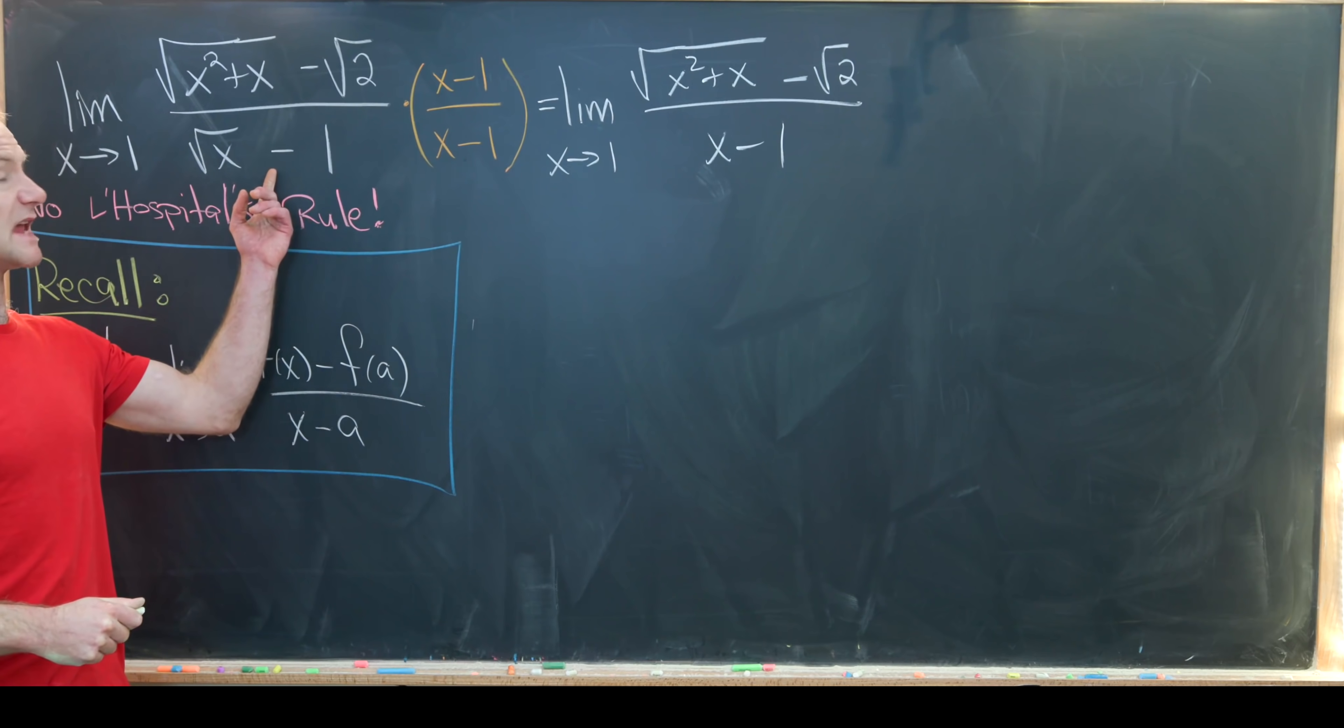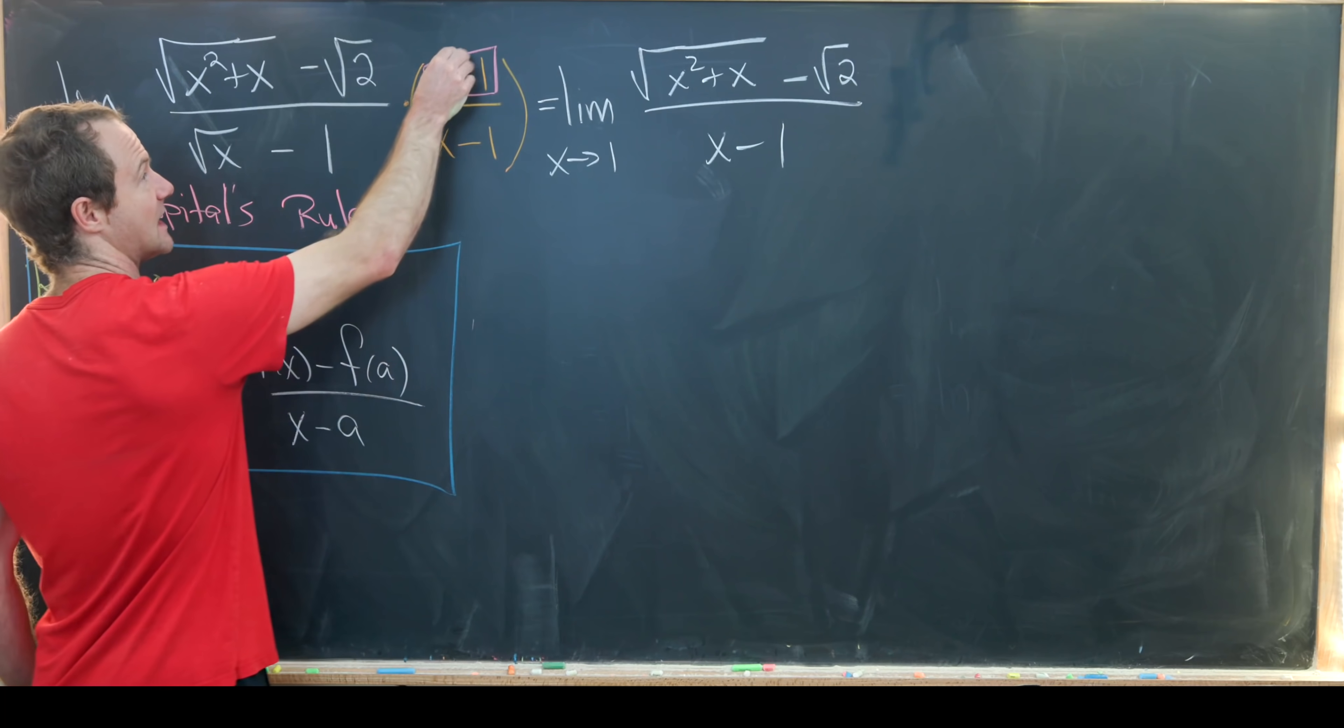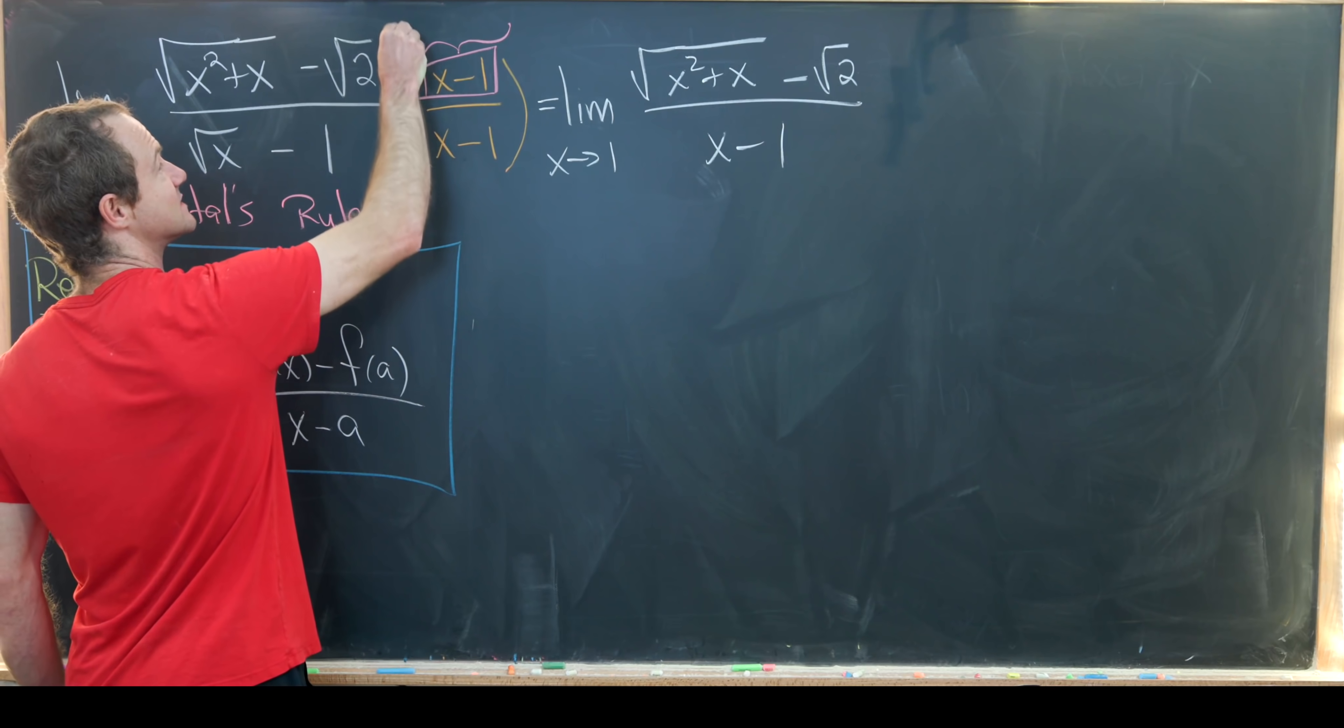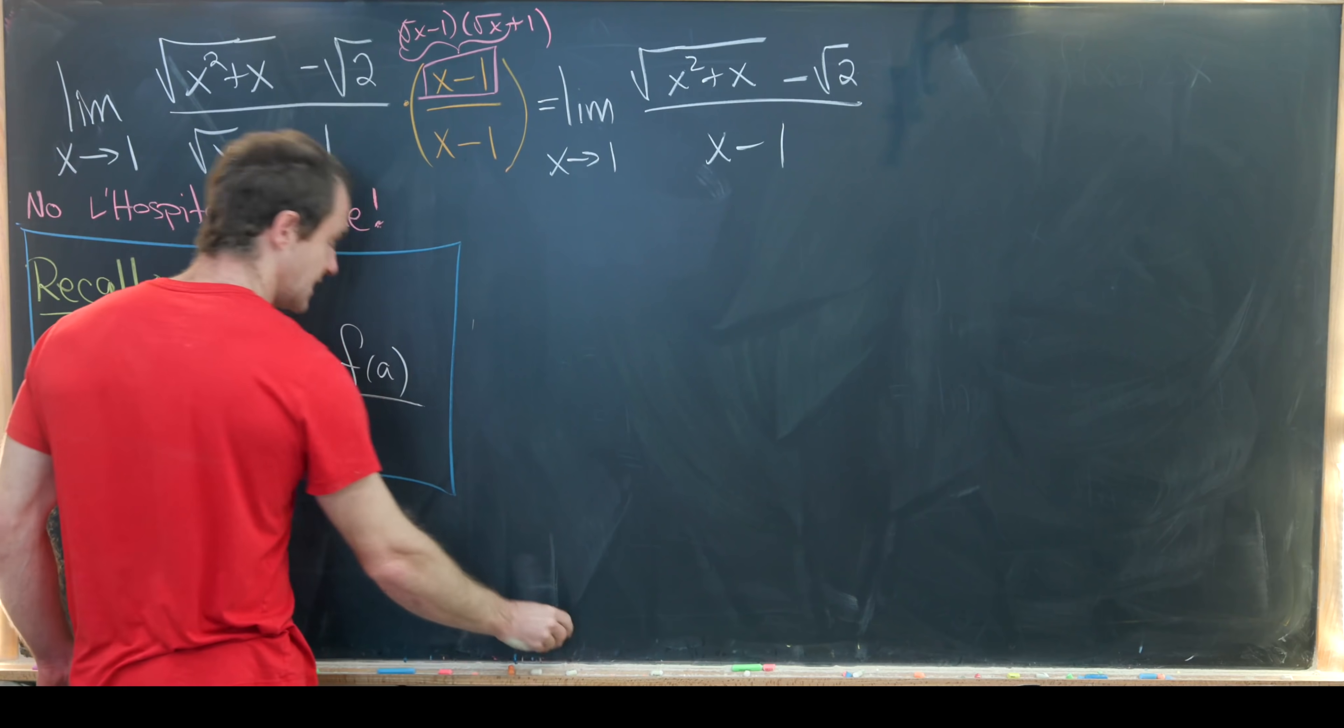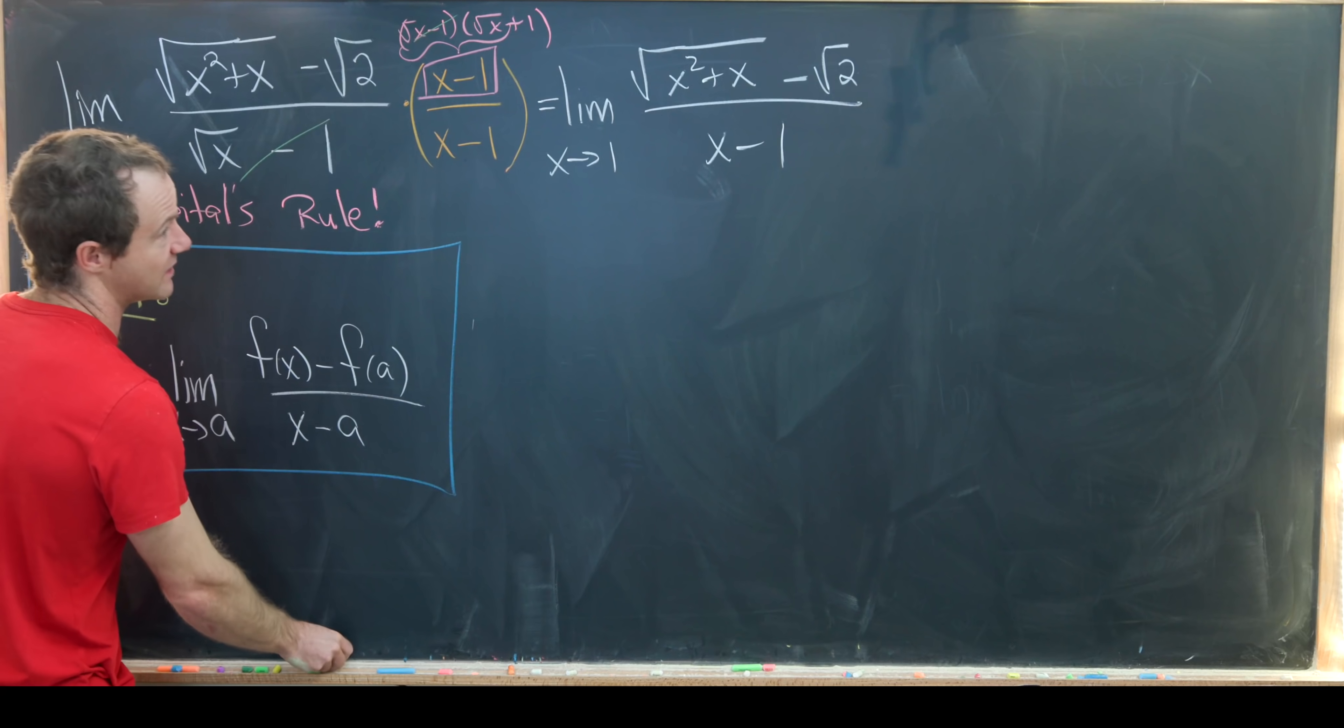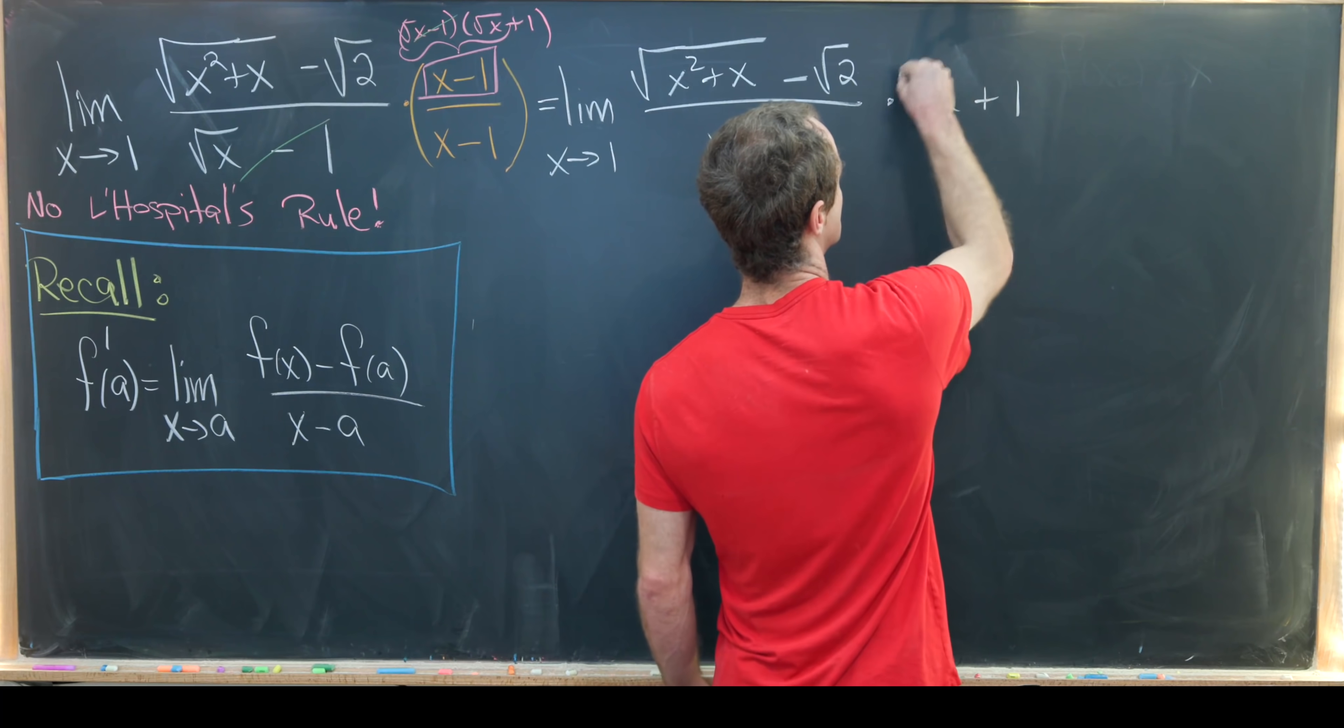I've just brought this here. And then the other thing that we'll do is take this guy and factor it. Notice that we can factor this as the square root of x minus 1 times the square root of x plus 1, giving us some nice cancellation. We can cancel this with this. So in the end, we have the square root of x plus 1.